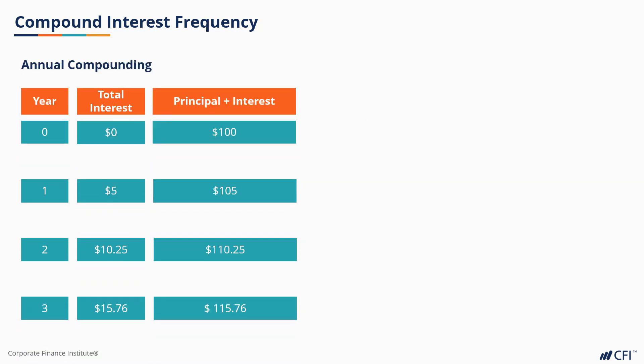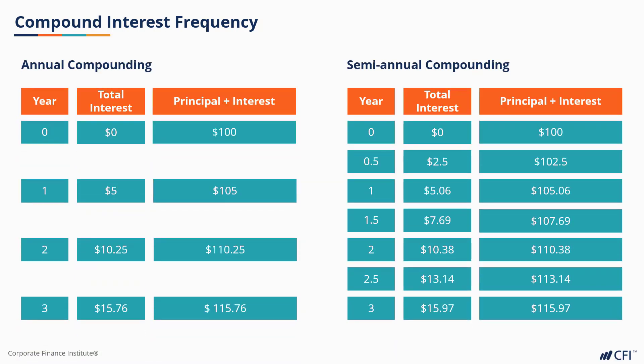In this slide, we examine the effect of compounding frequency, that is, the number of times a year interest is compounded. If interest is compounded semi-annually, twice a year, you will earn more interest. The reason that this concept is important will be discussed in greater detail when we talk about yields in the Fixed Income Fundamentals course.